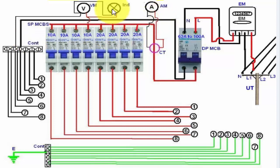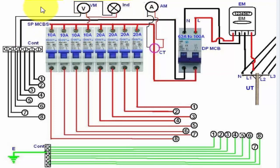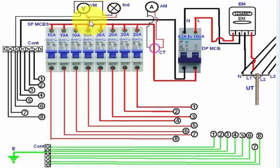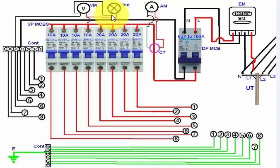After that, we have also wired a voltmeter and light indicator. One wire comes from the neutral to the voltmeter and light indicator, and one wire comes from the line or phase.